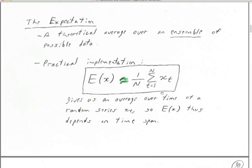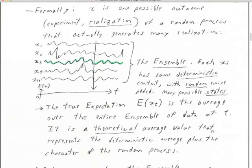If N is 1, the average is going to vary like crazy. If N is a month long — two billion samples — it's going to be pretty stable. Theoretically, the value X we get out of this random process is one possible outcome — one realization of a random process. That random process actually generates many realizations. The science fiction writers looked at what mathematicians were doing with the expectation and the ensemble and went out into the idea of multiple alternative universes — that's where the Doctor Who science fiction idea came from.